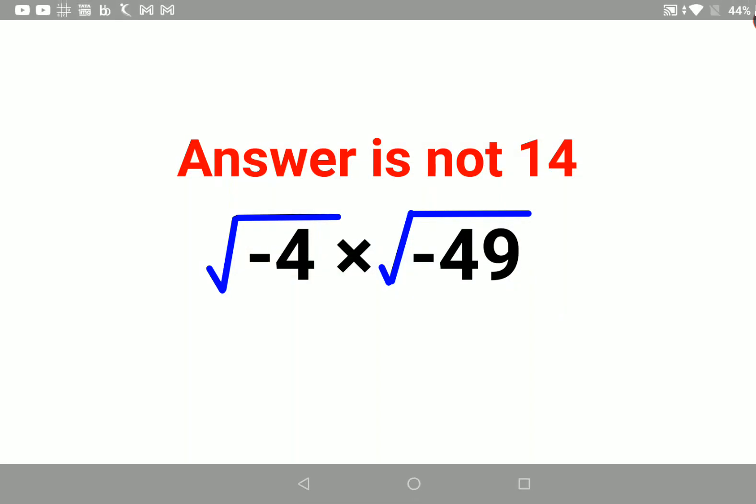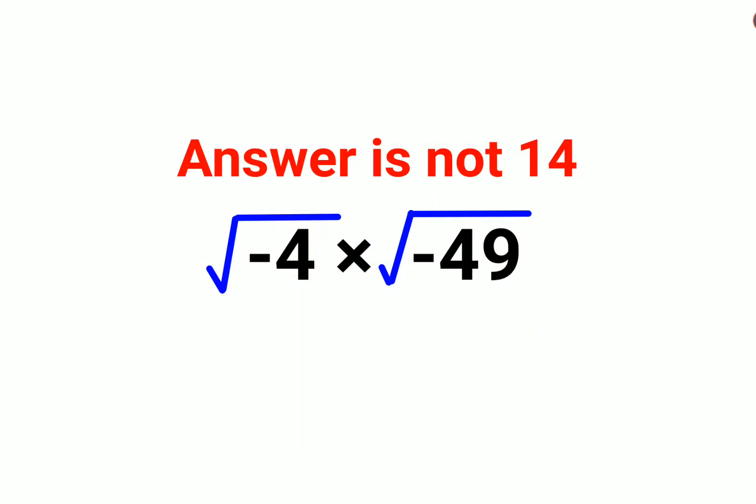Welcome everyone. A lot of people thought that the answer for this one will be 14. Why? Because they thought this -4 can be written as 4×(-1), and since the 49 is also under the root, they wrote this as 49×(-1). And as we know that 4 is a perfect square,